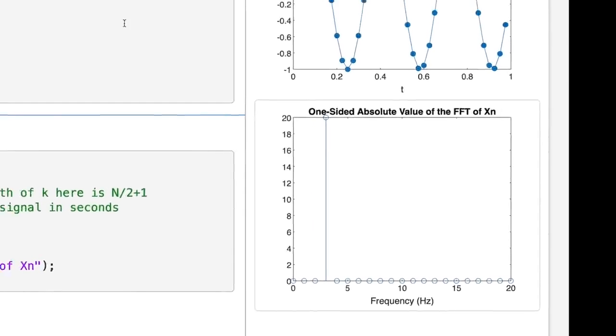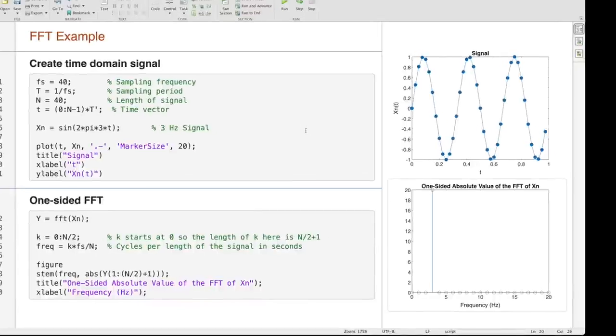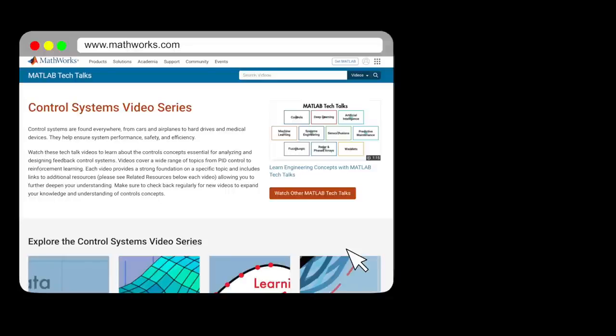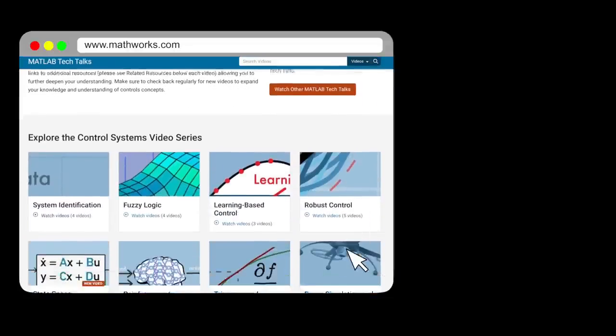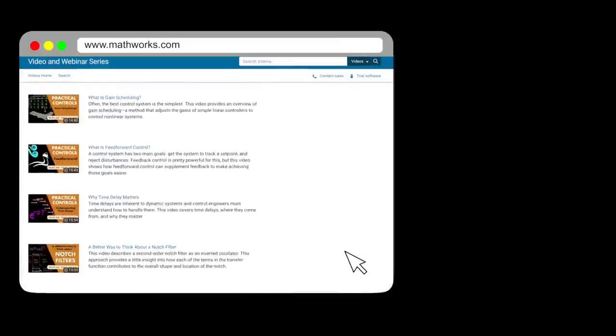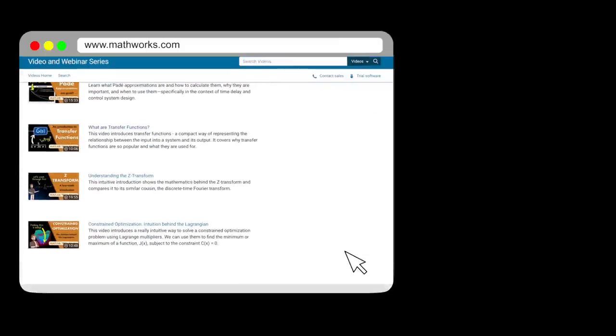Alright. So hopefully what we covered in this video, each of these steps to get the one-sided FFT makes sense. And if you want to try this out yourself or check out some of the resources where you can learn more, I've left links to everything down below. Now don't forget to subscribe to this channel so that you don't miss any future videos. And also you can find all of the Tech Talk videos across many different topics nicely organized at MathWorks.com. And if you liked this video, then you might be interested to learn about the Fourier transform in our video on the Z-Transform. Alright. Thanks for watching, and I'll see you next time.